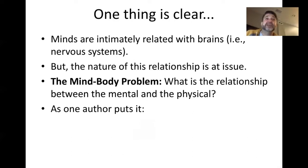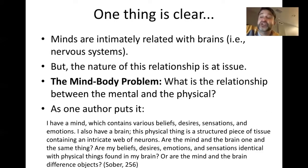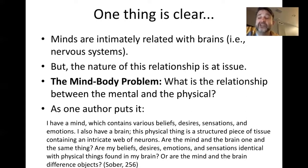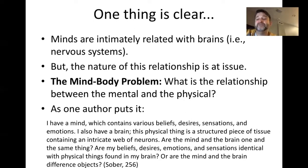The mind-body problem is a perennial problem in philosophy. It's been discussed at least since Plato. As one author puts it: I have a mind which contains various beliefs, desires, sensations and emotions. I also have a brain — this physical thing is a structured piece of tissue containing an intricate web of neurons. Are the mind and the brain one and the same thing? Are my beliefs, desires, emotions, and sensations identical with physical things found in my brain? Or are the mind and the brain different objects? This is how philosopher Elliot Sober at the University of Wisconsin poses this question.